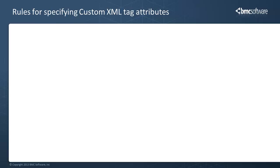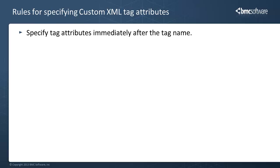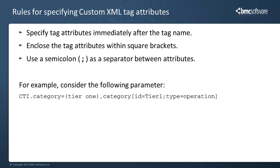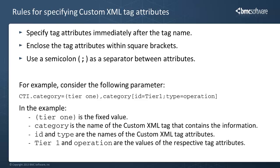For custom XML files, you can set parameter values to tag attributes. Several rules apply when you add tag attributes to the configuration file: you must specify tag attributes immediately after the tag name, you must enclose the tag attributes within square brackets, and you must use a semicolon as the separator between attributes. For example, consider a parameter where "Tier 1" is the fixed value, "Category" is the name of the custom XML tag, and ID and Type are the names of the tag attributes with values "Tier 1" and "Operation" respectively.